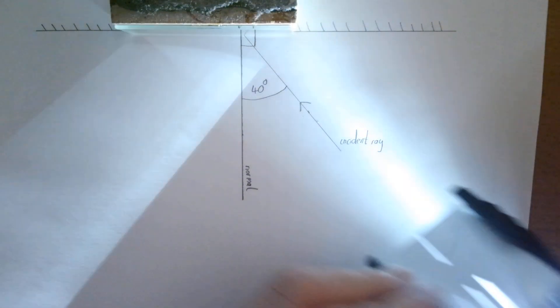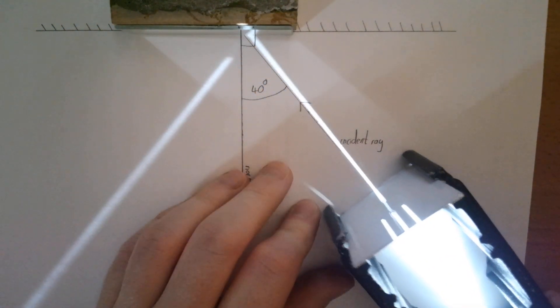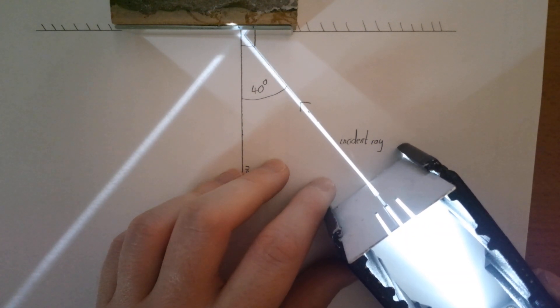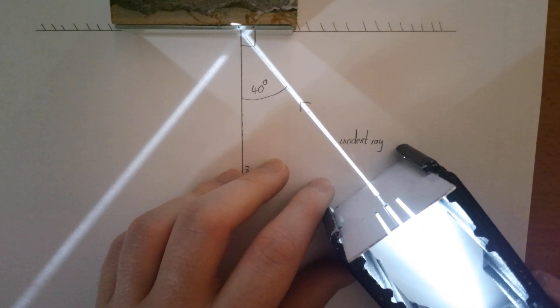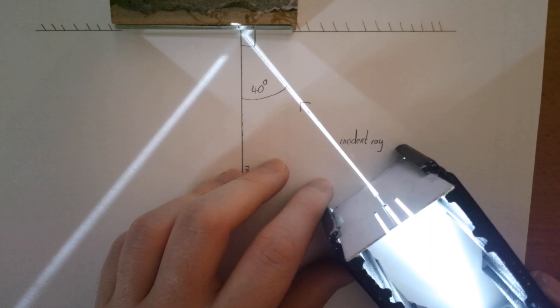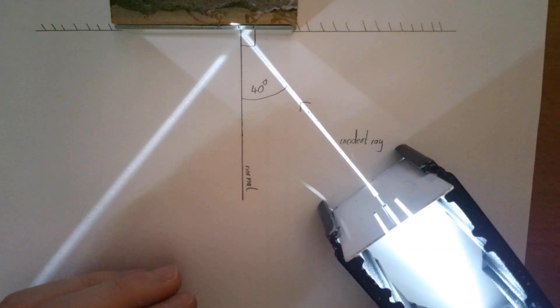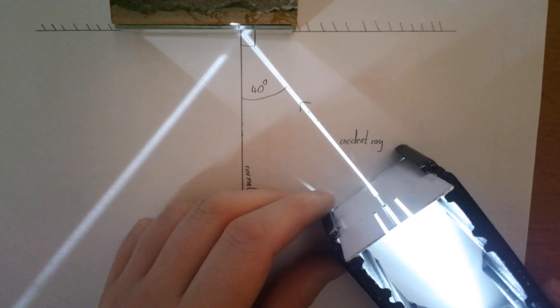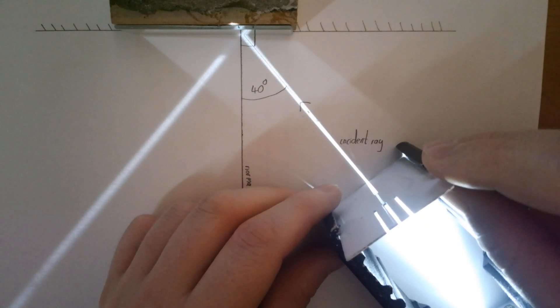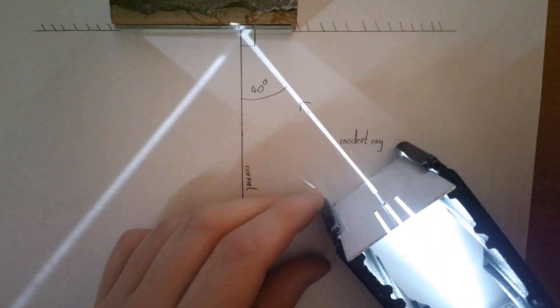What we are going to do is take our ray box and line it up so that the incident ray coming from the ray box is following that line. I'm being very careful to make sure that the ray I've drawn on paper is as close as possible down the middle of the ray that I have drawn. It just takes a little bit of moving around to get it perfectly lined up. I think that's about as close as we are going to get it.